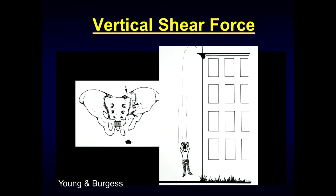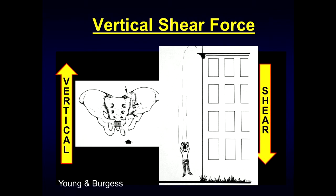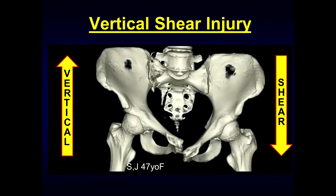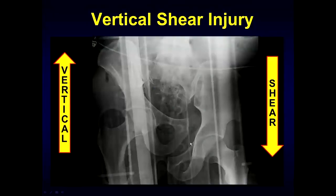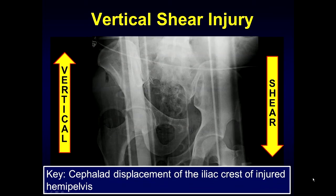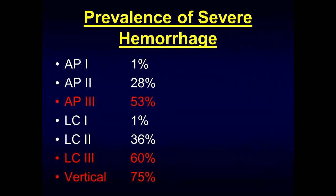Vertical shear injuries occur from falling from a height, typically with differential force — one leg is longer and contacts the ground before the other side. What occurs is vertical shearing of the entirety of the involved hemipelvis. On CT 3D, we can see the offset at the pubic symphysis and the injury pattern through the right sacral ala. In this individual, the right hemipelvis is elevated compared to the left, with offset at the pubic symphysis and widening of the left sacroiliac joint. Look for that cephalad displacement of the iliac crest of the injured hemipelvis.